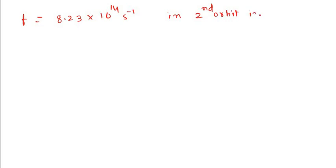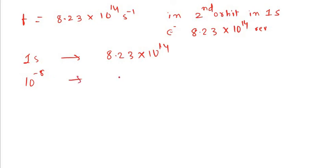in 1 second electron makes 8.23 into 10 raise to 14 revolutions. Then I know that in 1 second electron makes 8.23 into 10 raise to 14 revolutions, then in 10 raise to minus 8 seconds because the electron is actually going to be there for 10 raise to minus 8 seconds, how many revolutions?